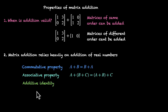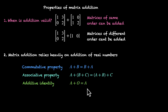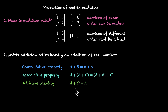Then we have additive identity. Additive identity simply says that there is a matrix — we call it the zero matrix — that when you add it to a matrix, you get the same matrix. So A plus the zero matrix will give you the same matrix A. The condition here is that this zero matrix has to have the same order as A. For real numbers we have the number zero; for matrices, we have zero matrices.